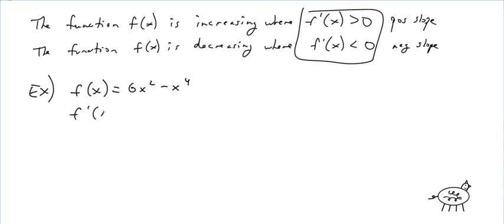Okay, so I'm going to do f'(x) is equal to 12x minus 4x cubed. Okay. And, of course, we set that equal to 0. And we could factor a 4x out of here. And we get 3 minus x squared.